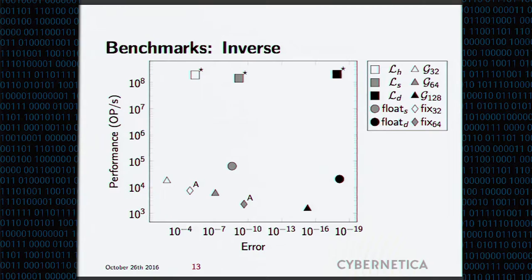In case of inverse, the logarithmic numbers are doing fantastically. The reason being that inverse in case of logarithmic numbers is just inverting the exponent. So it's a local operation. You don't even lose any precision in that operation. And as expected, floating point numbers do also reasonably well. And fixed point-like numbers are doing not so great.